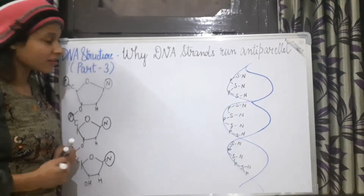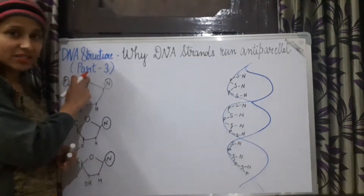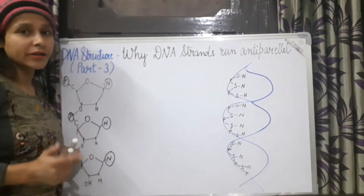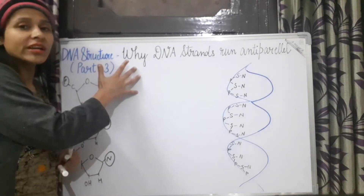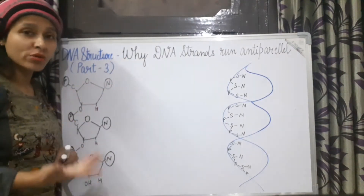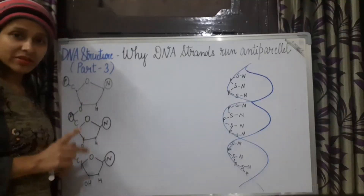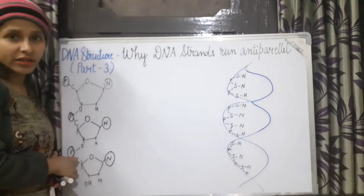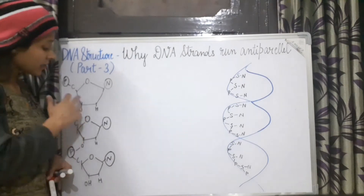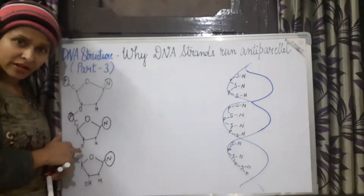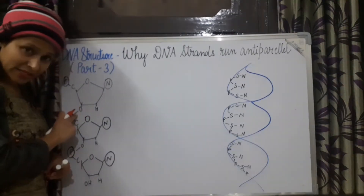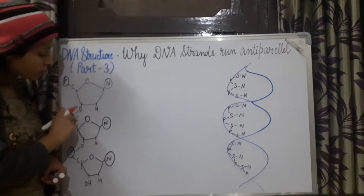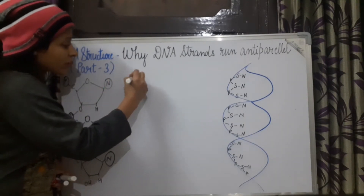Hello everyone. Today we will continue with the DNA structure and we will understand why two DNA strands run anti-parallel, that is, why two DNA strands are opposite to each other. This much we have discussed in part 2 — how these nucleotides are arranged on a DNA strand and how this strand is 5' to 3'.